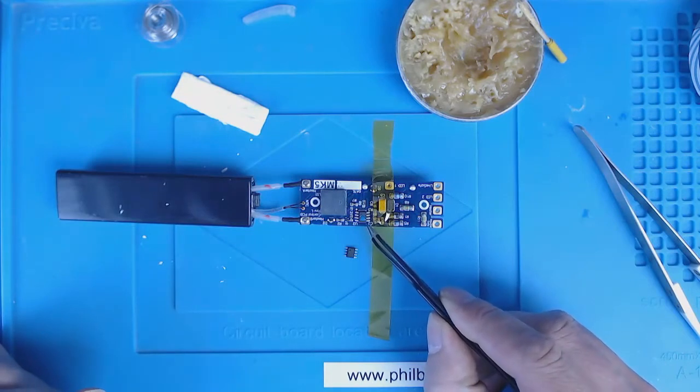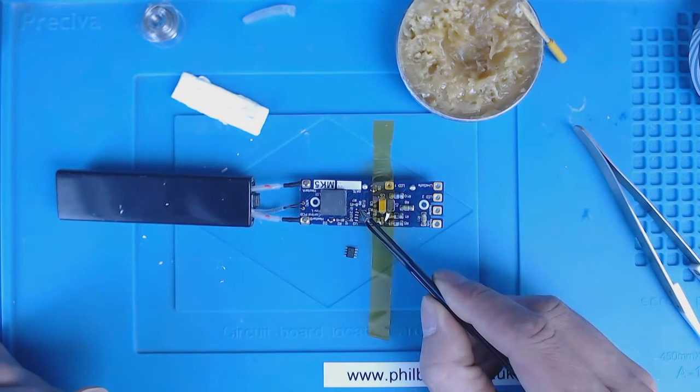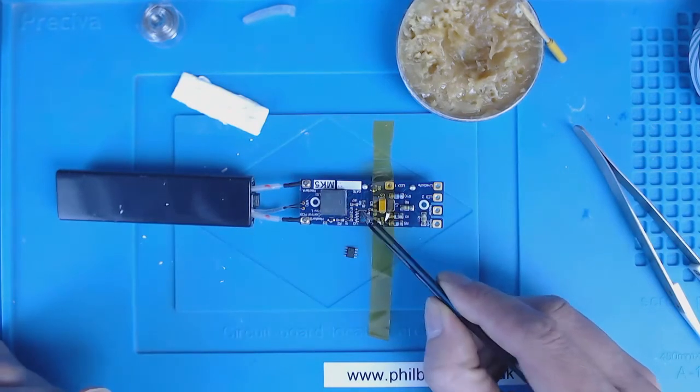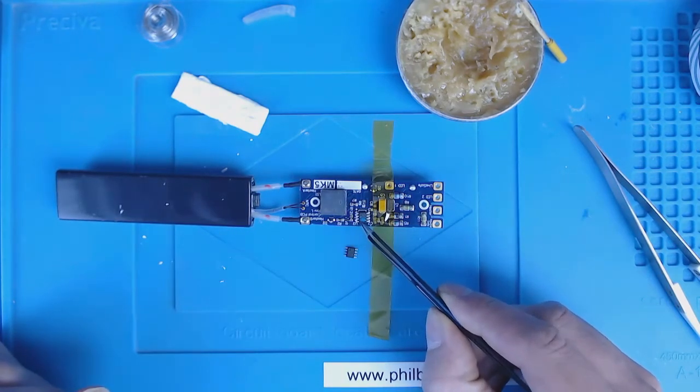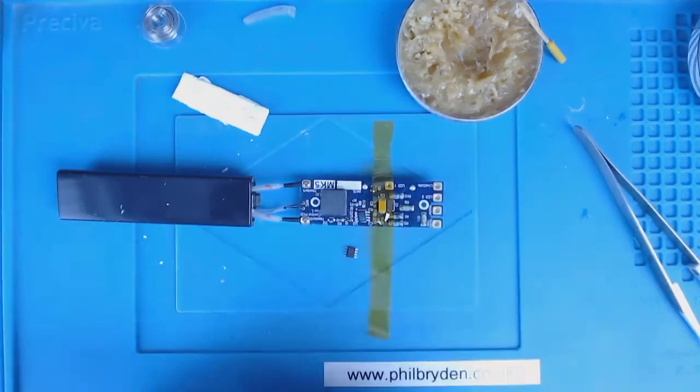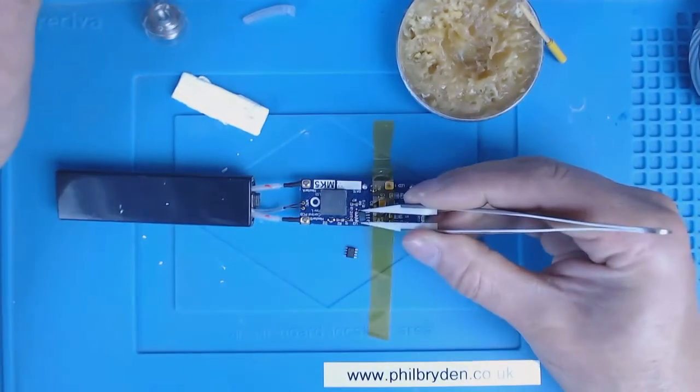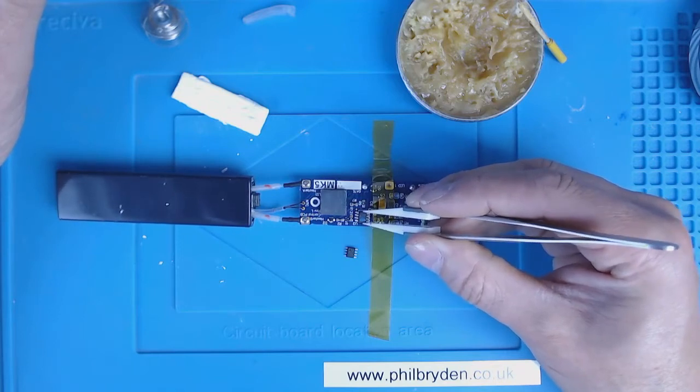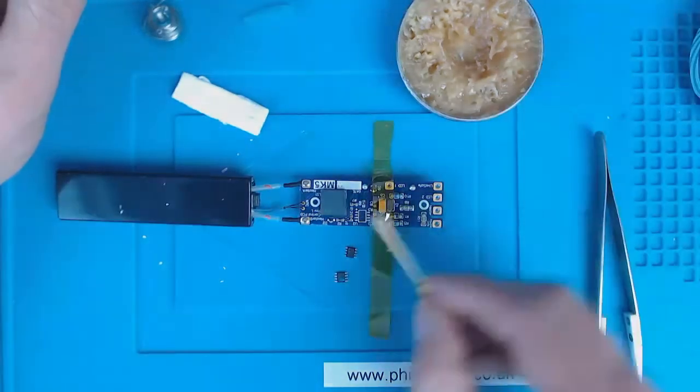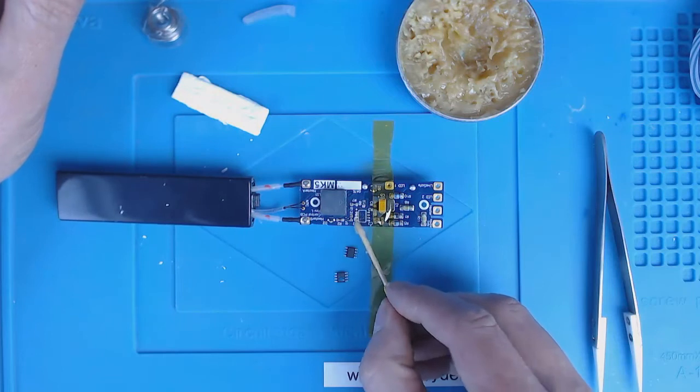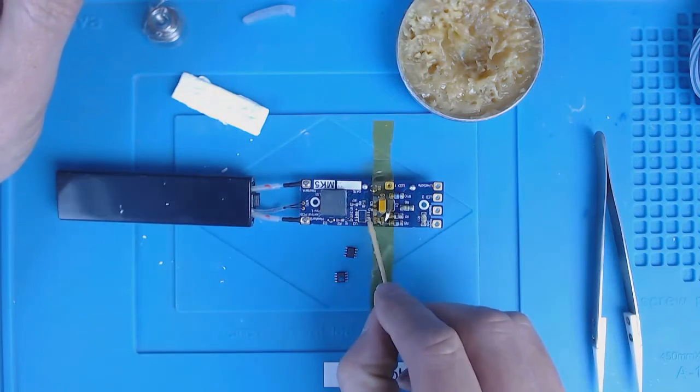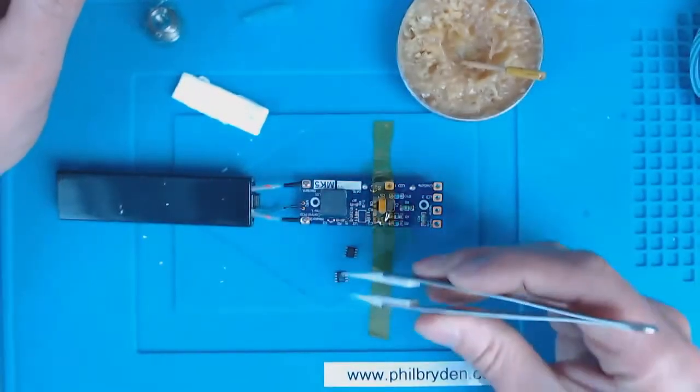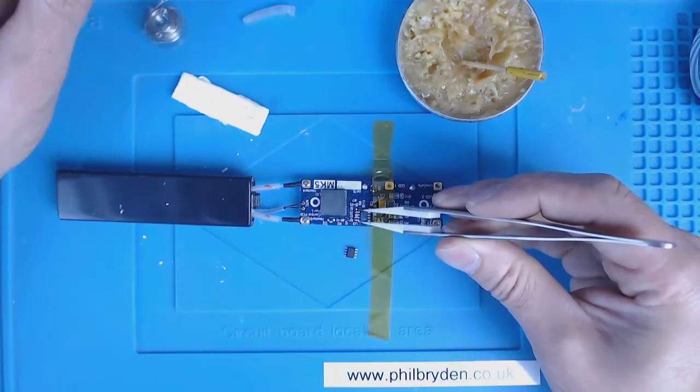I've got two options: I can blast it with the hot air gun or I can just tap it with the soldering iron. I think I'll blast it with the hot air gun. What I'll do is put a little bit of flux paste on and see if that helps it stick into place.